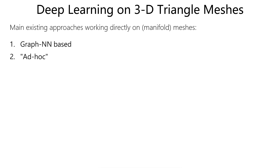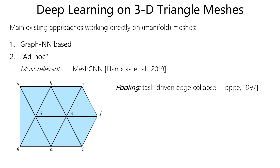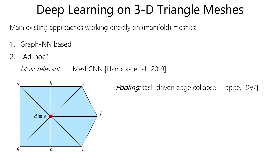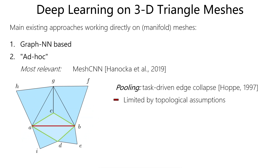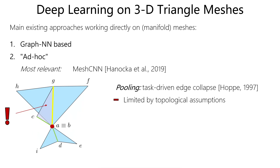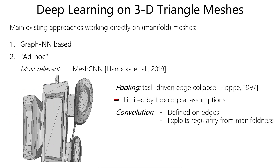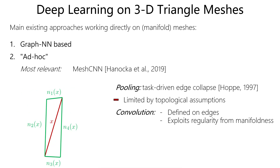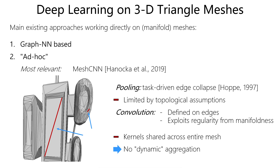On the other hand, methods that exploit specific mesh properties — notably MeshCNN, which implements pooling as a task-driven edge collapse, which however limits the type of elements that can be pooled, and defines convolution on the mesh edges, but uses kernels shared across the entire mesh, therefore not adapted to the local variability of its elements.